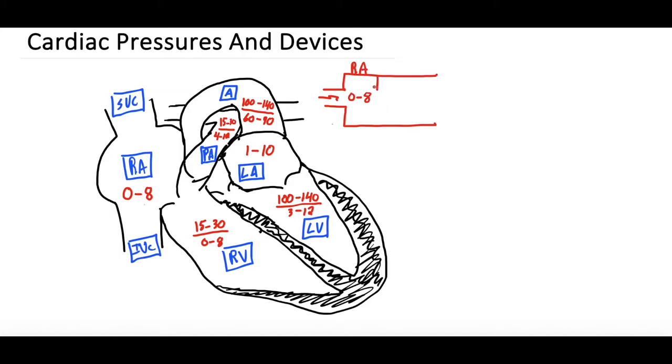It then travels through a valve, which is the tricuspid valve, into the right ventricle. And the right ventricular pressure, as we talked about, is 15 to 30, over 0 to 8. It then travels through another valve, which is the pulmonic valve, into the pulmonary artery. And that pressure, as we talked about, is 15 to 30, over 4 to 12. And then it goes through the lungs.